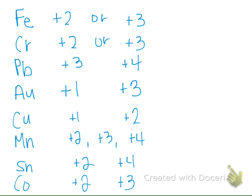Now that we know how to identify an element's charge — tell me what the charge of chlorine would be. Minus one. Are there any negative transition metals? We don't deal with them very often. What would be the charge of calcium? Plus two. Very good, plus two.